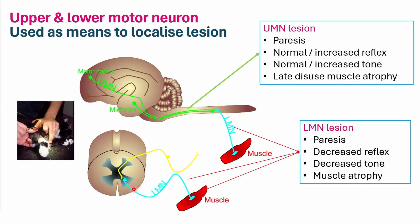Whereas if we damage the cell body of the lower motor neuron or the lower motor neuron itself — such as the cell bodies of the sciatic nerve, the femoral nerve, or the radial nerve, which are all lower motor neurons — then we damage the reflex arc, so we'll have a decreased reflex. We'll also have low tone in that muscle and muscle atrophy.